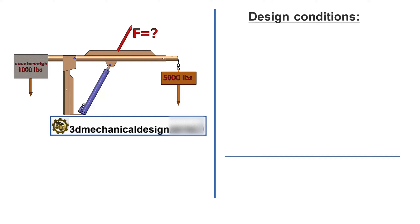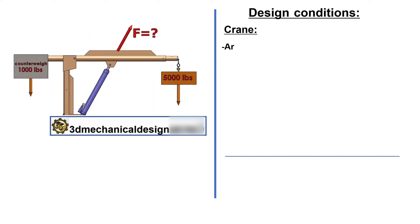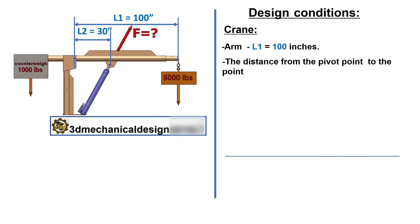Calculate the crane cylinder force required to handle 5,000 pounds. Design Conditions: Crane Arm L1 equals 100 inches. The distance from the pivot point to the point of application of the force of the cylinder is L2 equals 30 inches.